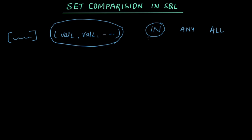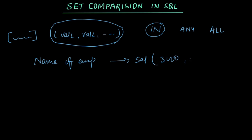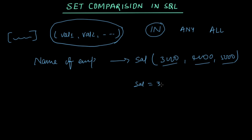Let's understand IN first. A simple example: list the name of employees having some salary — let's say 3000, 4000, or 5000. One simple approach is to compare salary equal to 3000, or salary equal to 4000, or salary equal to 5000.